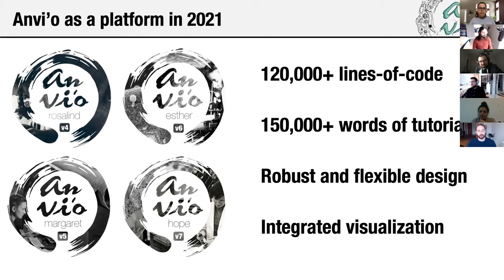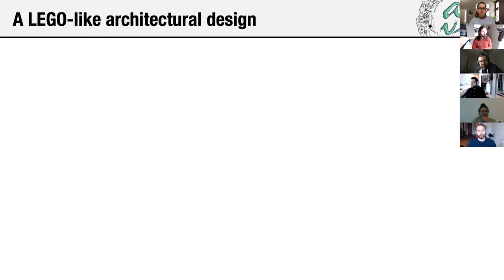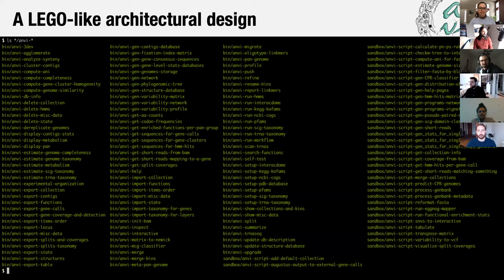What makes Amvio different lies at its architectural design. Amvio has a Lego-like architectural design. In my opinion, it represents a departure from current popular software development practices and stands on a unique architecture that empowers its users with flexibility. Each of the little programs that Amvio comes with perform simple tasks rather than trying to accomplish entire workflows, yet they can be brought together to create new workflows.